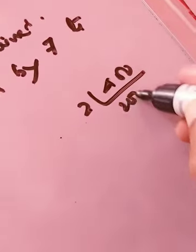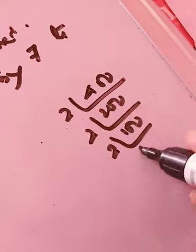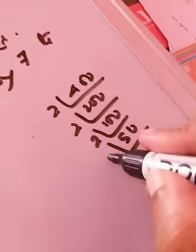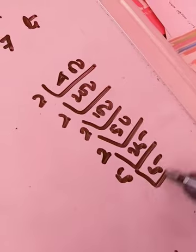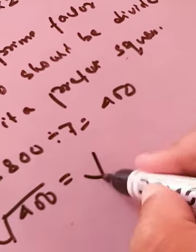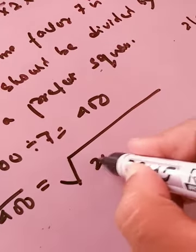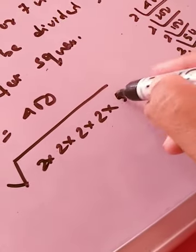So let say 2|400, 2|200, 2|100, 2|50, 2|25, 5|5 and 5|1. So how many 2s are there? 1, 2, 3, 4. So 1, 2, 3, 4 and 2 5s are there, 5×5.